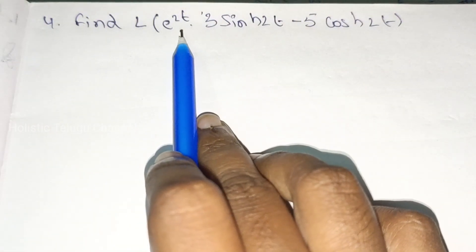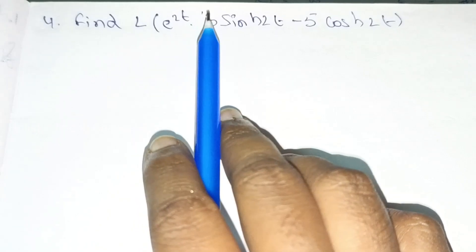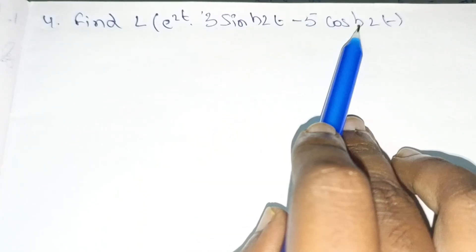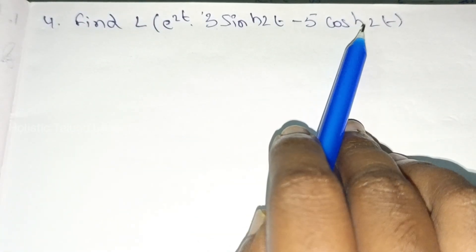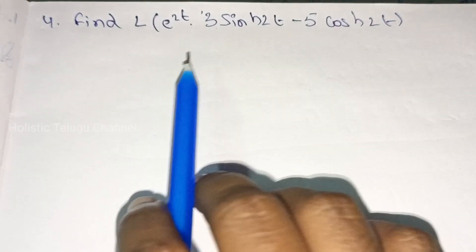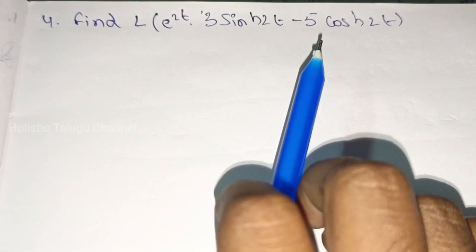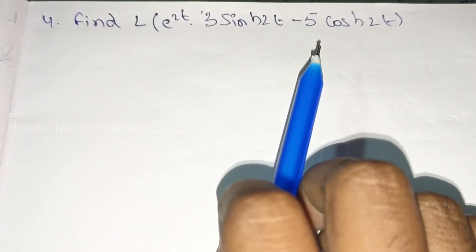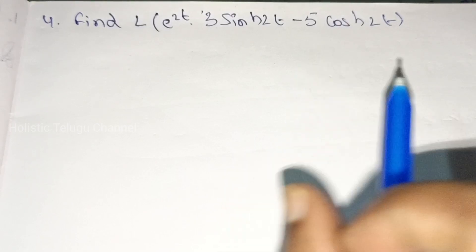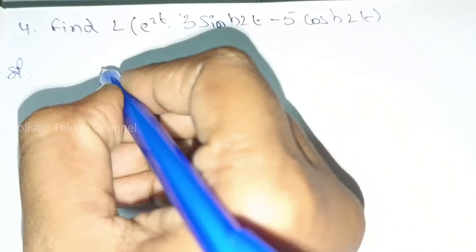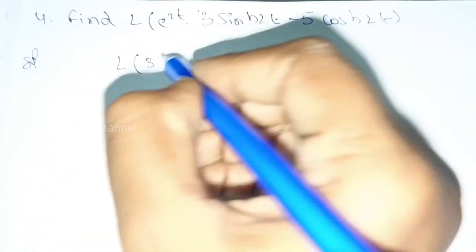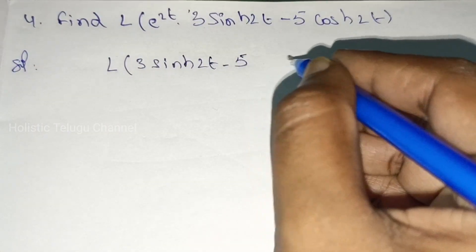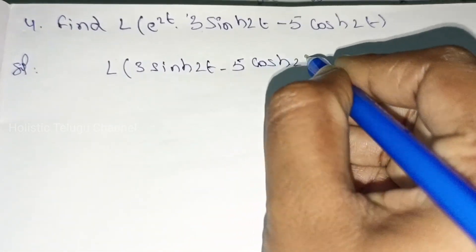We have e^(2t), so we apply the First Shifting Theorem. Using the First Shifting Theorem, first we apply the Laplace transform, then we use the first shifting theorem for cosh(2t).